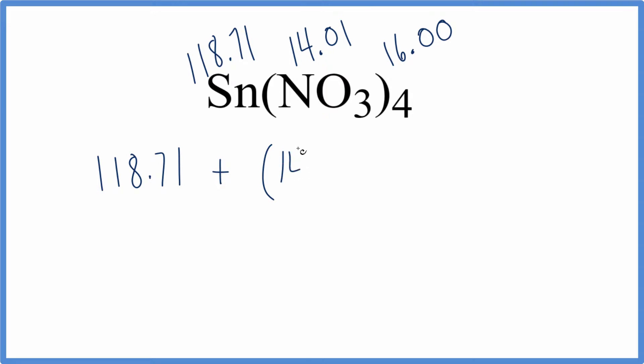Nitrogen 14.01 plus oxygen, and we have 3 oxygens, so 3 times 16.00, which is 48.00, and then we close our parentheses and multiply that by 4.